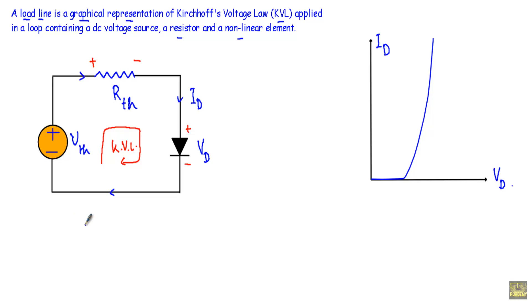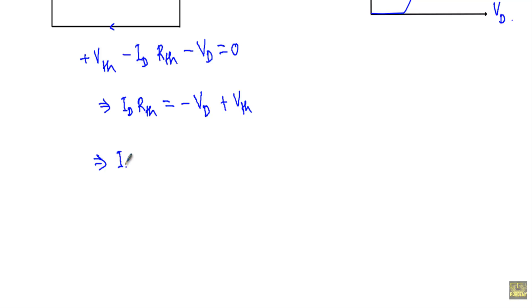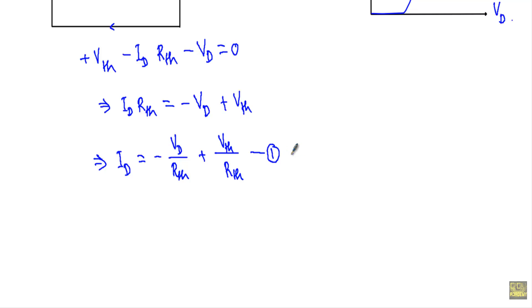Applying KVL in this loop: VTH minus ID·RTH minus VD equals 0. Rearranging this equation, I get ID equal to minus VD divided by RTH plus VTH divided by RTH. Let's call this equation number 1. I will now show that equation number 1 represents an equation of a straight line, and that straight line will be our load line.